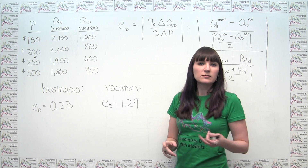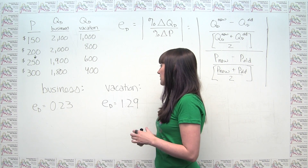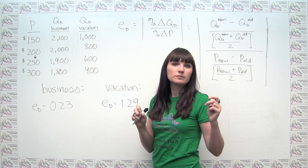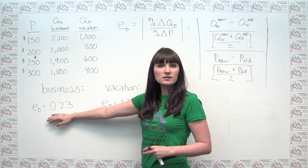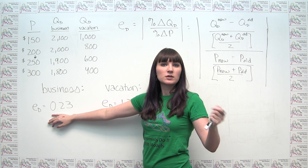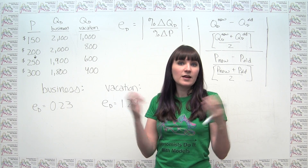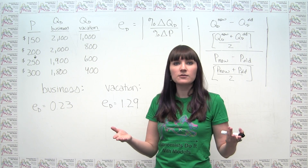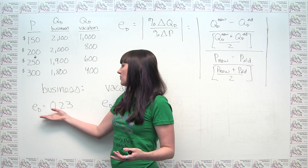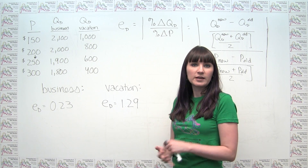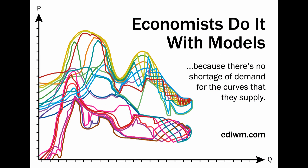A third reason — a bit outside the strict textbook material — involves what economists call the agency problem, or a misalignment of incentives. The business traveler may be making decisions about their own travel, but they're not the ones stuck with the bill. Once the person making the decision is not the one bearing the cost, they're not going to be particularly price sensitive. That's another reason why we might see lower price elasticity for the business traveler compared to the vacationer who is presumably paying out of their own pocket.